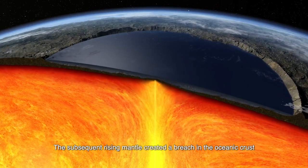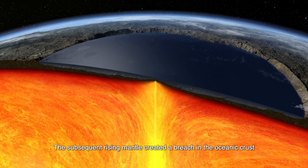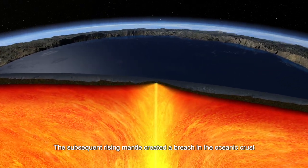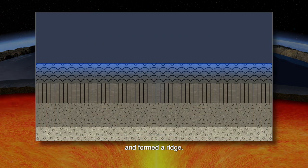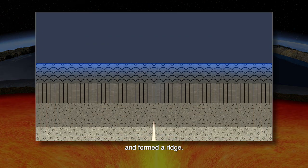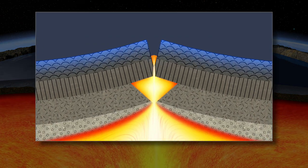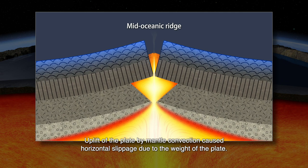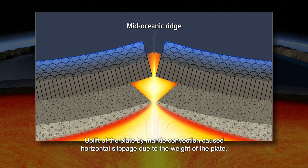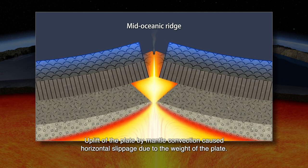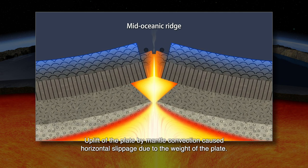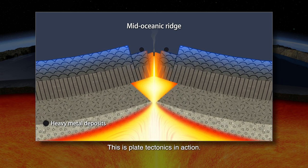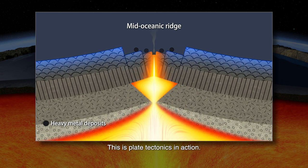The subsequent rising mantle created a breach in the oceanic crust and formed a ridge. Uplift of the plate by mantle convection caused horizontal slippage due to the weight of the plate. This is plate tectonics in action.